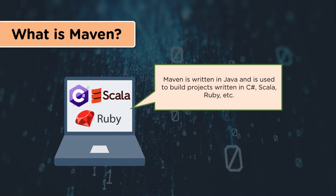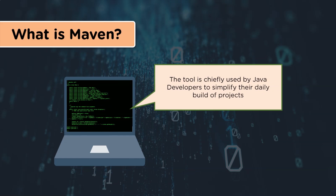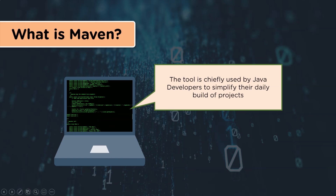In the process, it takes care of the builds, dependencies, reports, distributions, releases and the mailing list. Maven is chiefly used for Java based projects. The tool helps build the code and download dependencies, and is used to develop and manage any Java based project. It simplifies the day-to-day work of Java developers and helps them build their projects.